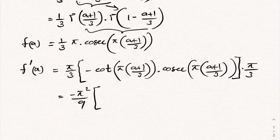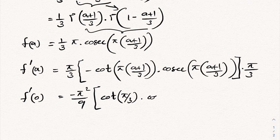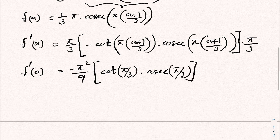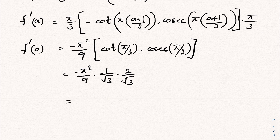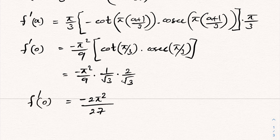Plugging in 0, f'(0) equals minus pi squared over 9 times cotangent of pi over 3 times cosecant of pi over 3. We know cotangent of pi over 3 is 1 over root 3, and cosecant of pi over 3 is 2 over root 3. Simplifying: minus 2 pi squared over 27. This equals f'(0), which equals I, so this is the answer. If you like this type of videos, please subscribe to this channel. Thank you for watching.